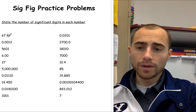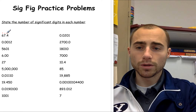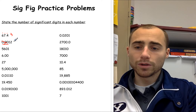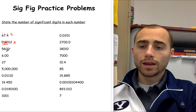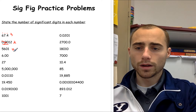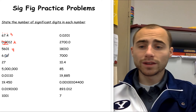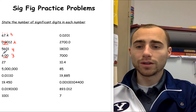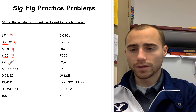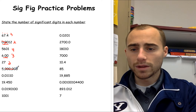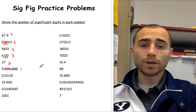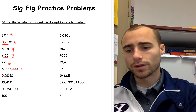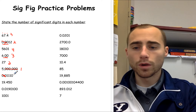Let's go through them. First, identify if we have a decimal — we do, and there are no zeros, so this will have three significant figures. This number has a decimal, so we do not count the leading zeros — it has two significant figures. This number has no trailing or leading zeros and has four significant figures. For 6.00 — we do have trailing zeros, but there is a decimal in the number, so because there's a decimal, you have to count all of them — that one has three significant figures. 27 has two significant figures. 5 million has no decimal, so we don't count any of those trailing zeros — just one significant figure.